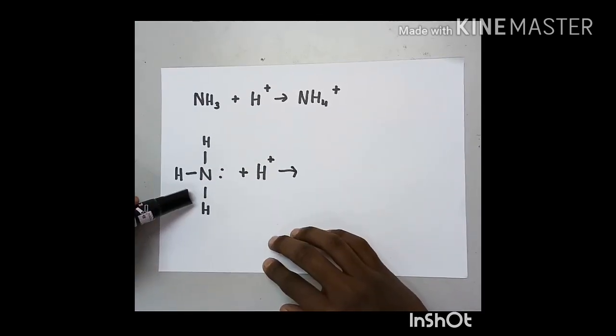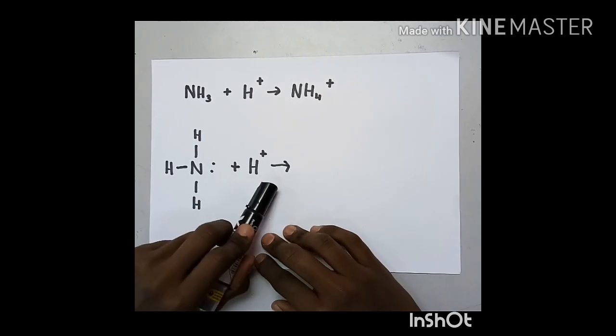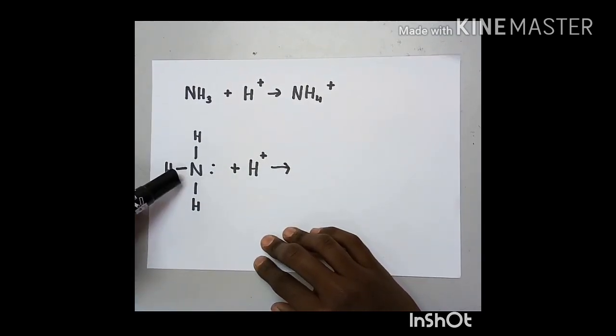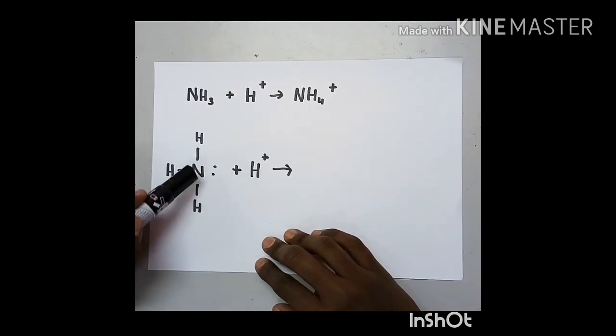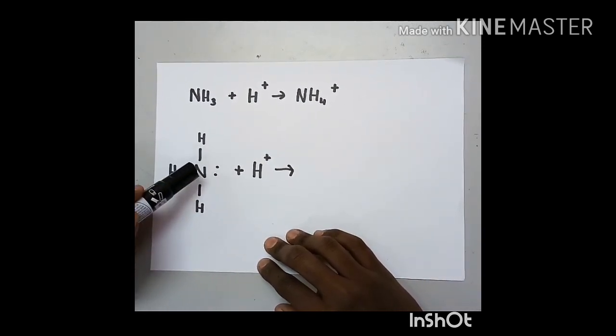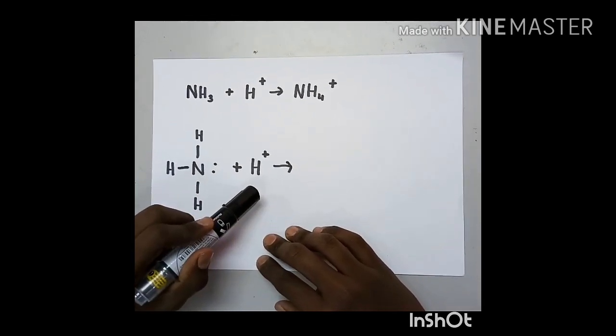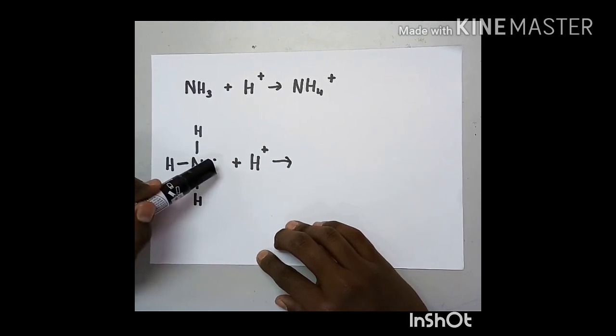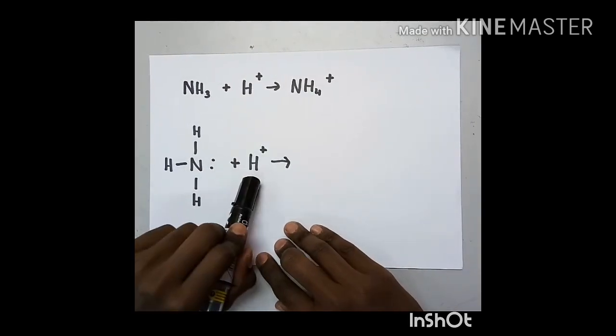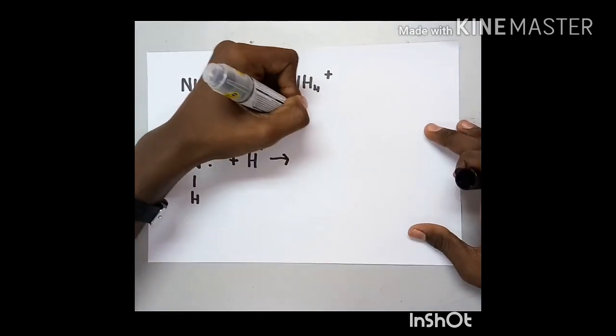In this case, ammonia consists of one lone pair and the hydrogen ion doesn't have a lone pair. When the dative bond is formed, it must be formed from the donor towards the acceptor. In this case, the ammonia is the donor and the hydrogen ion is the acceptor. The electron from the lone pair is donated towards the hydrogen ion. So, the formation of the dative bond is here.